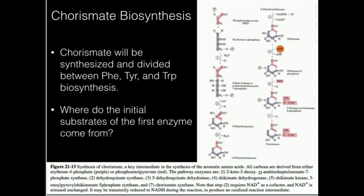This is a long, complicated pathway and I'm not going to go into the details too much — that gets into the weeds. But I want to point out some important things. We are taking things from everyday pathways. Phosphoenolpyruvate is from glycolysis, and erythrose-4-phosphate is from the pentose phosphate pathway — particularly the non-oxidative version. Through a series of transformations, we ultimately get chorismate.